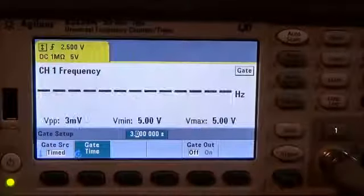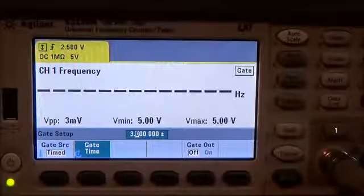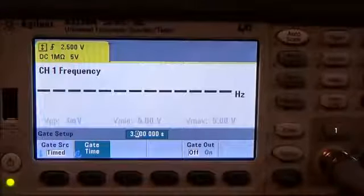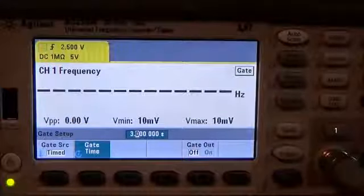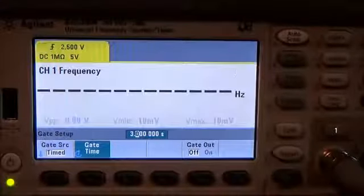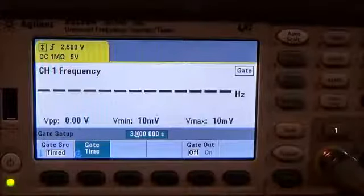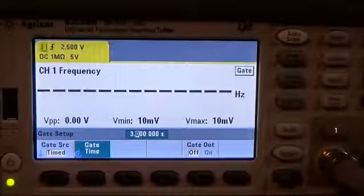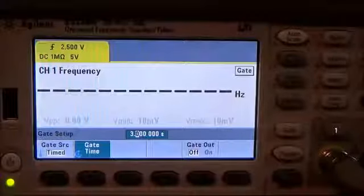Finally, the last hint and probably the most important one is to check the measurement timeout. A new feature with these 53200 series counters is the ability to actually set the amount of time you would allot for a measurement to be made.